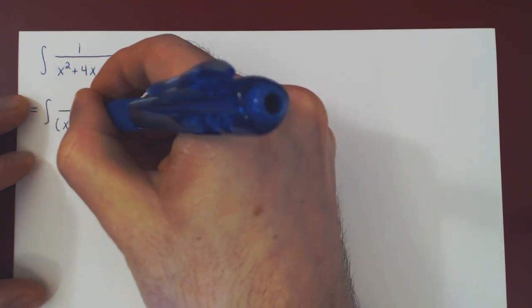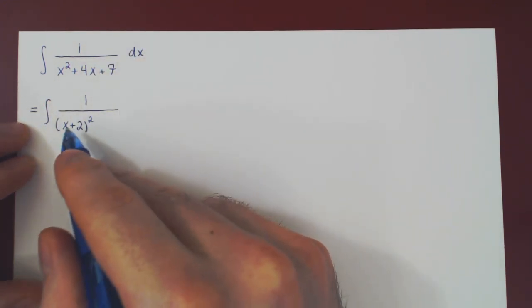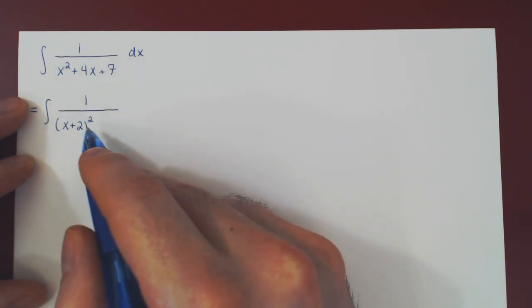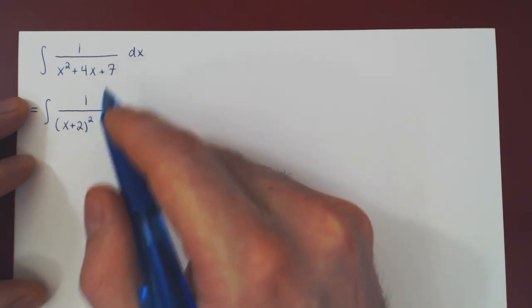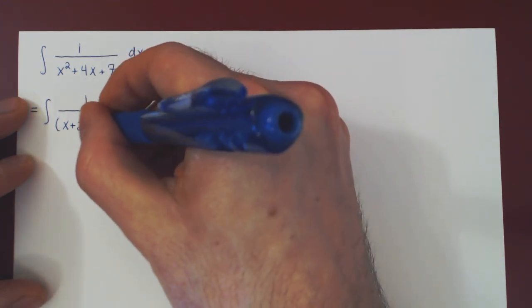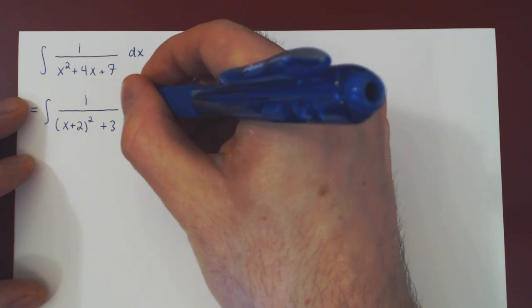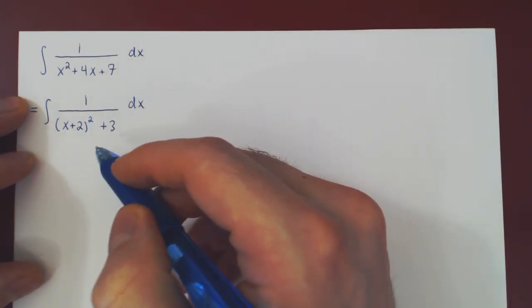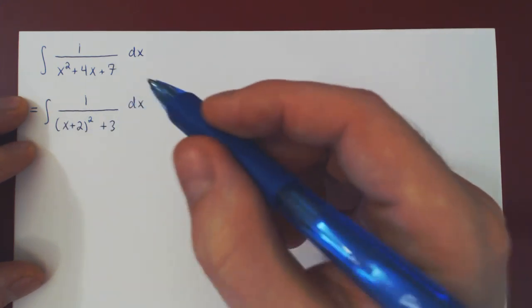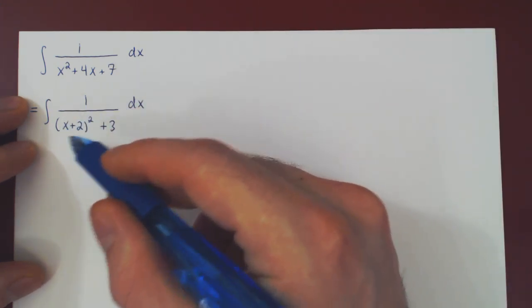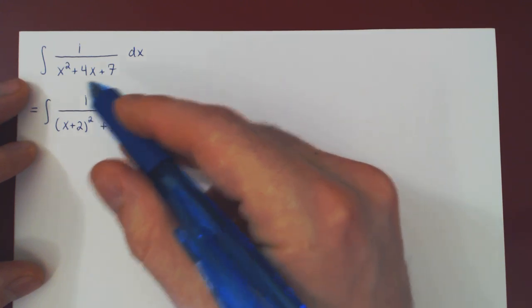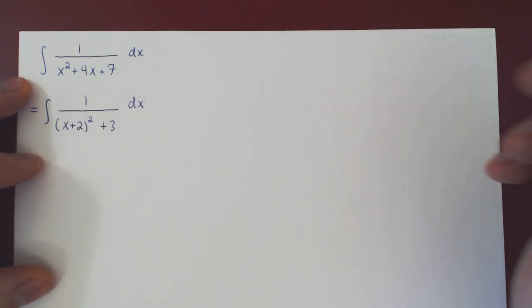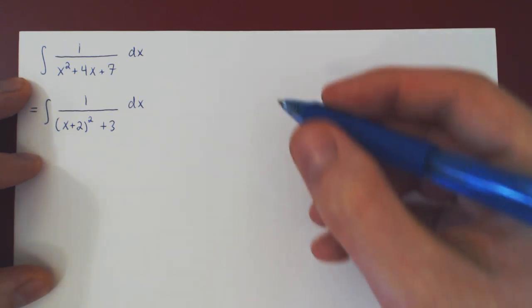This is a fairly easy one. If you square x plus 2, you get x squared, check, 2x plus 2x gives 4x, check, plus 4. But we have to have a 7, so of course 4 plus 3 is 7. And now this should look familiar: 1 over something squared plus a constant. Think of the derivative of arctan of x being 1 over x squared plus 1. So it's almost right, and we can make it right with a simple u-substitution, not a trigonometric substitution.